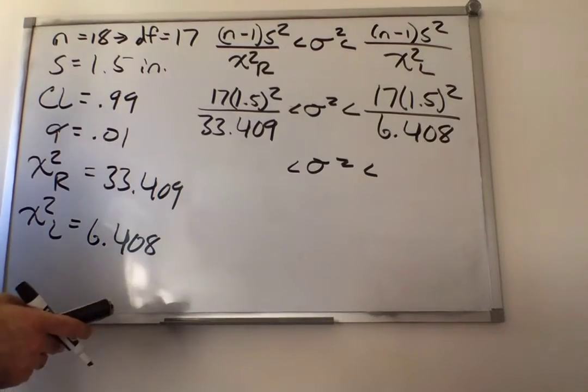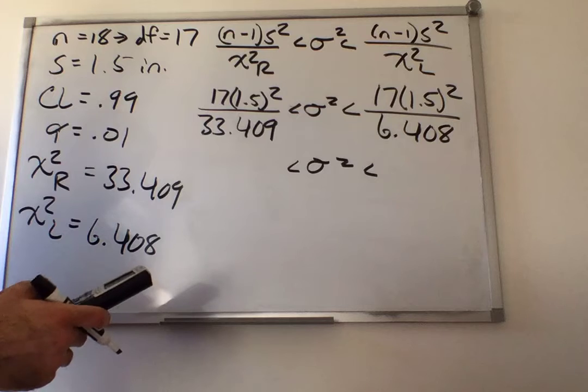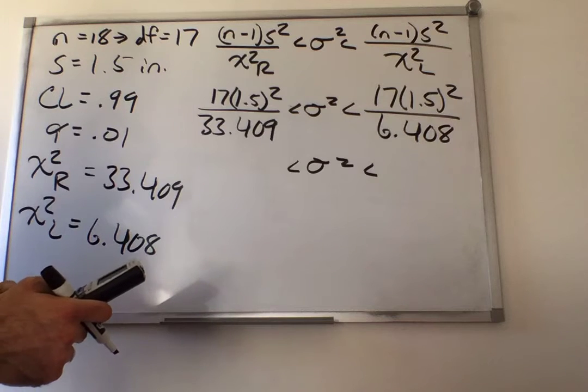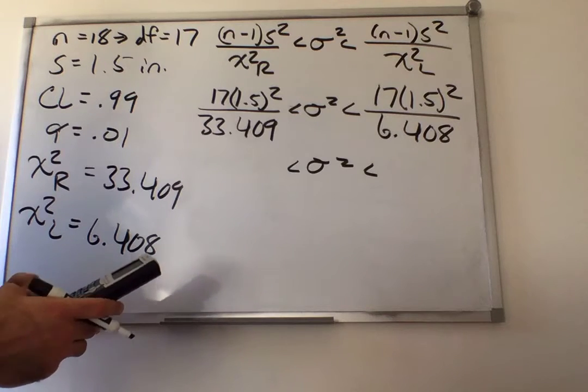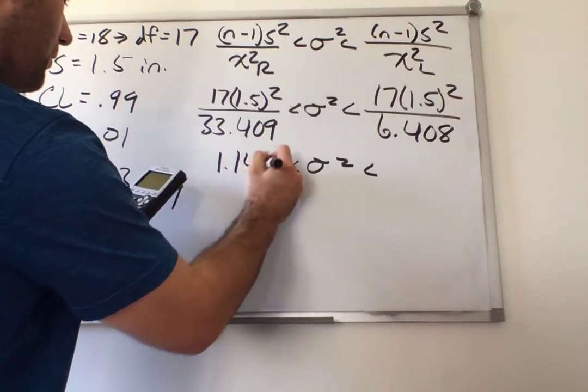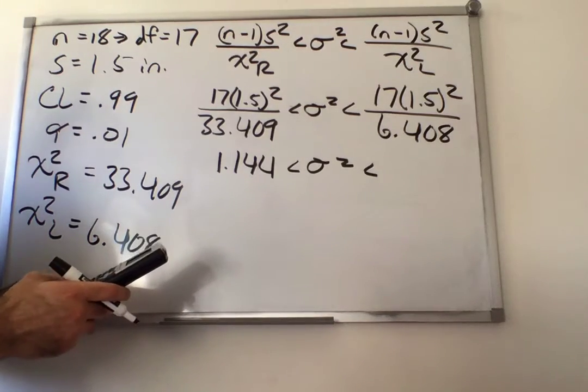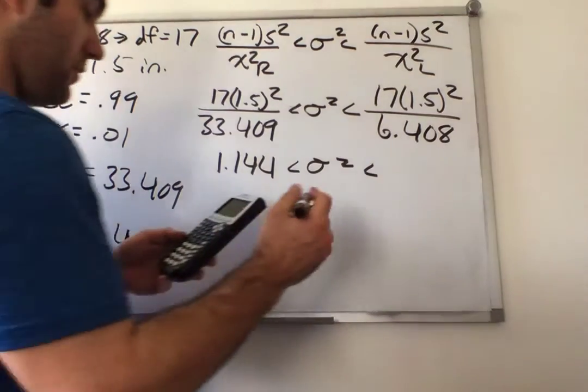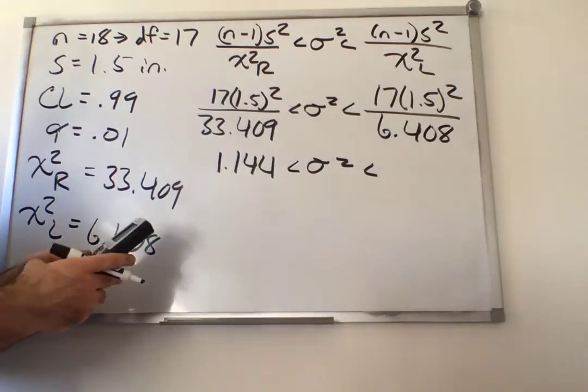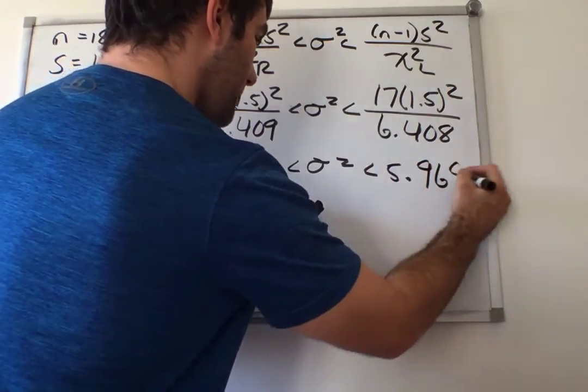So after you get to this point, just punch it in the calculator. 17 times 1.5 squared, divided by 33.409, is 1.144, and on that side, 5.969.